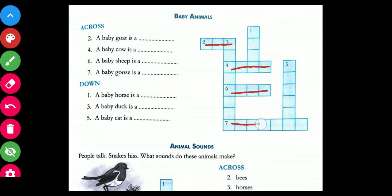Now coming to down. First one, the baby horse is a foal, F-O-A-L. Next, a baby duck is a duckling, D-U-C-K-L-I-N-G. And the baby cat is a kitten, K-I-T-T-E-N. This is how you have to solve the crossword.